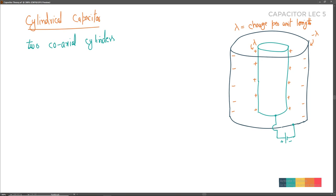Lambda is not the same as linear charge density on a rod. It is the charge distributed over the curved surface of one unit length of the cylinder - whether inner or outer shell. Multiply the length of the design by lambda to get the total charge on that design.